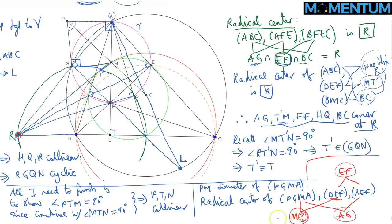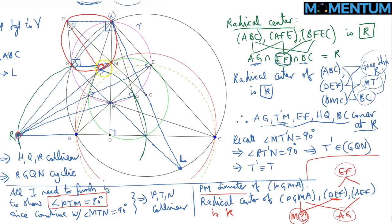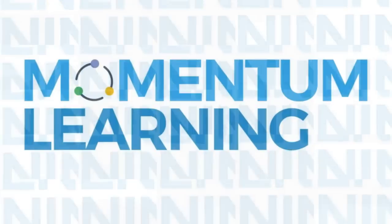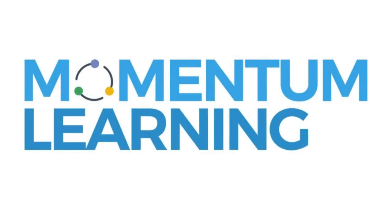Since T prime lies on circle PGMA and PM is the diameter of that circle, angle PT prime M = 90 degrees. Combining this with angle MT prime N = 90 degrees (since MN is the diameter of the nine-point circle), we conclude that P, T, N are collinear. This solves the problem.